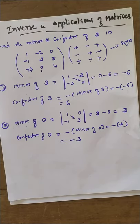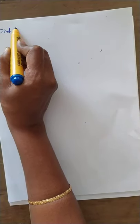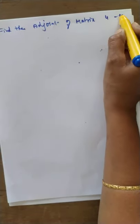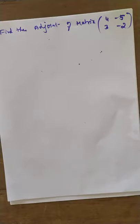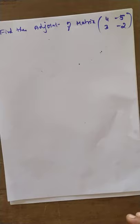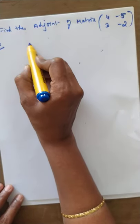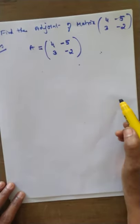This is how to find minors and cofactors. Now the next problem: find the adjoint of the matrix A = [4, -5; 3, -2]. To find the adjoint, we first need to find the cofactors of all elements.